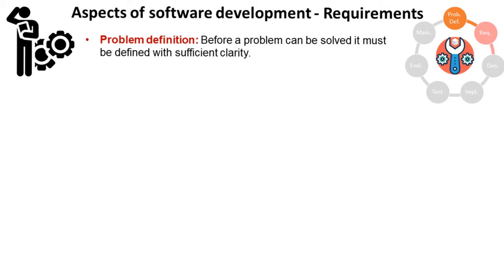If the problem definition does not convey the problem with sufficient clarity then it will need to be revised and improved until it does. Once we understand the problem we then have to gather all of its requirements, and from this we can produce a data model.